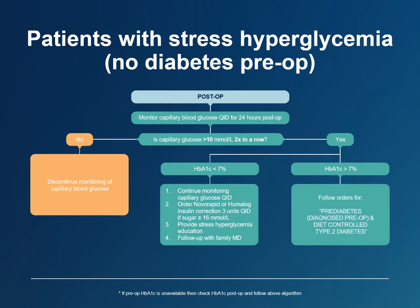If the hemoglobin A1c level is higher than 7%, then the patient does not have stress hyperglycemia. Rather, they have undiagnosed diabetes. Follow the algorithm for pre-diabetes and diet-controlled type 2 diabetes in the next slide.